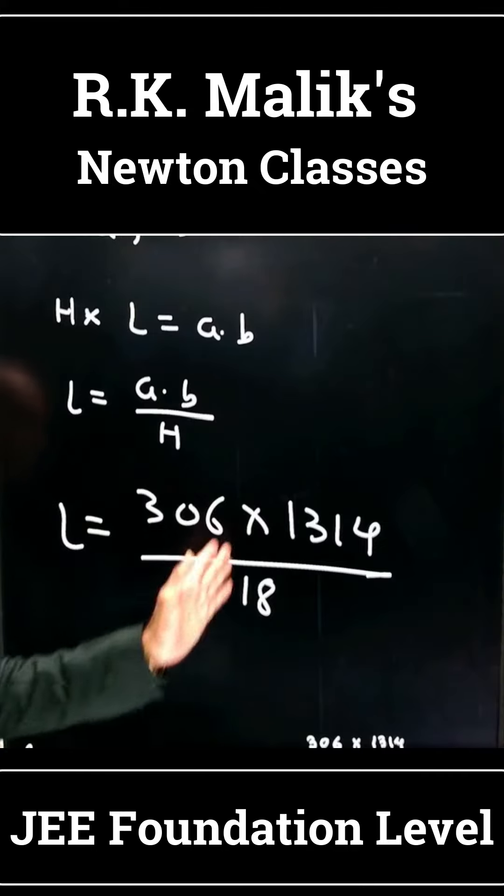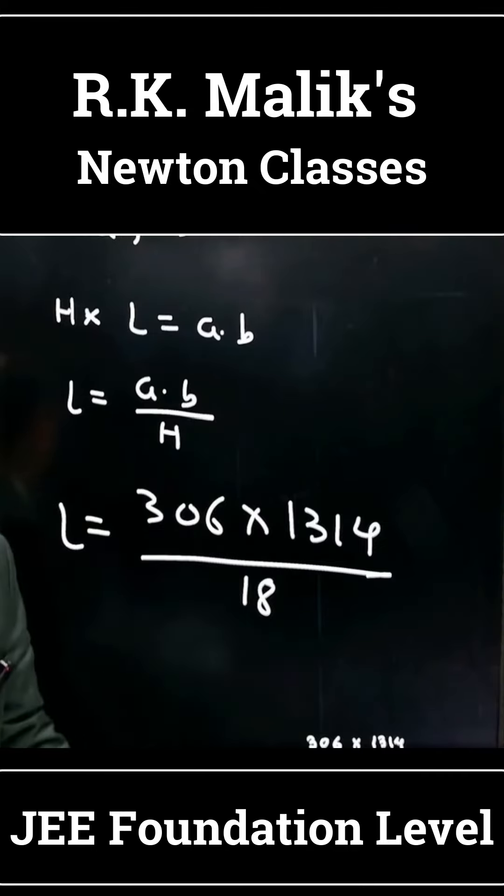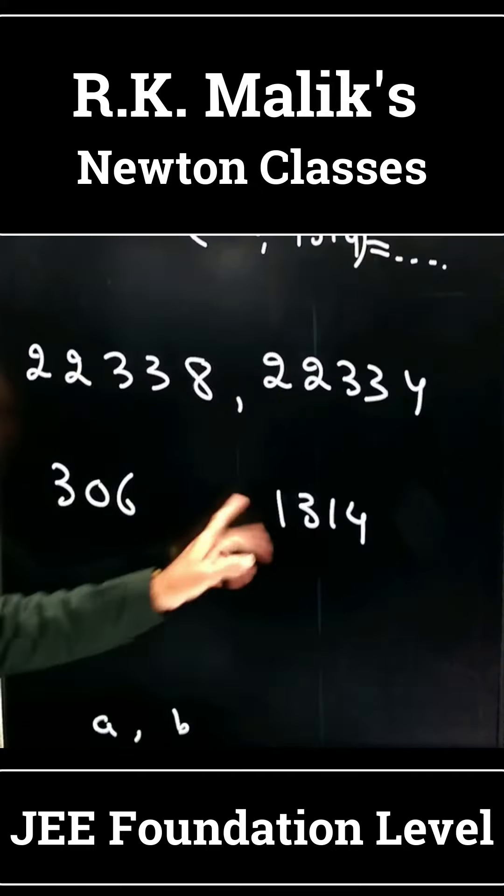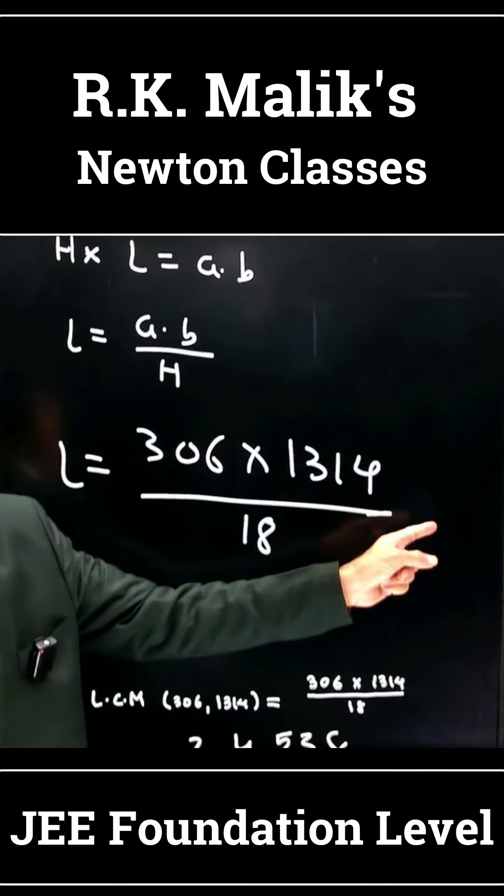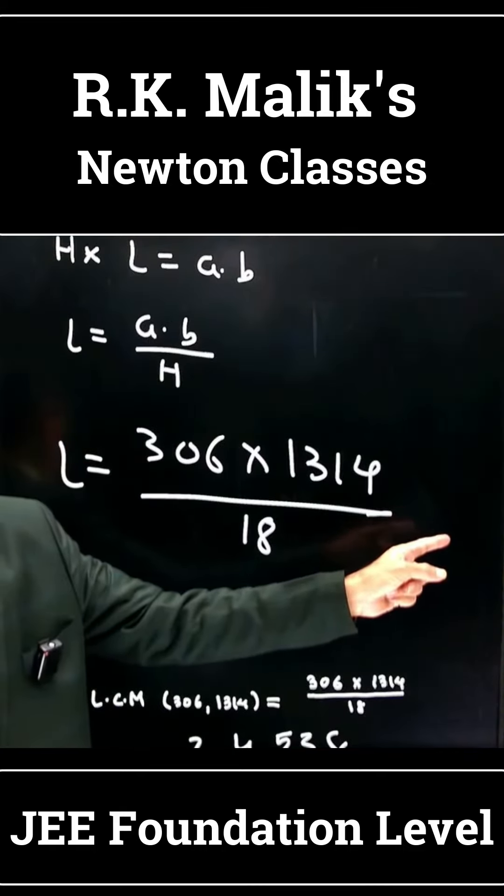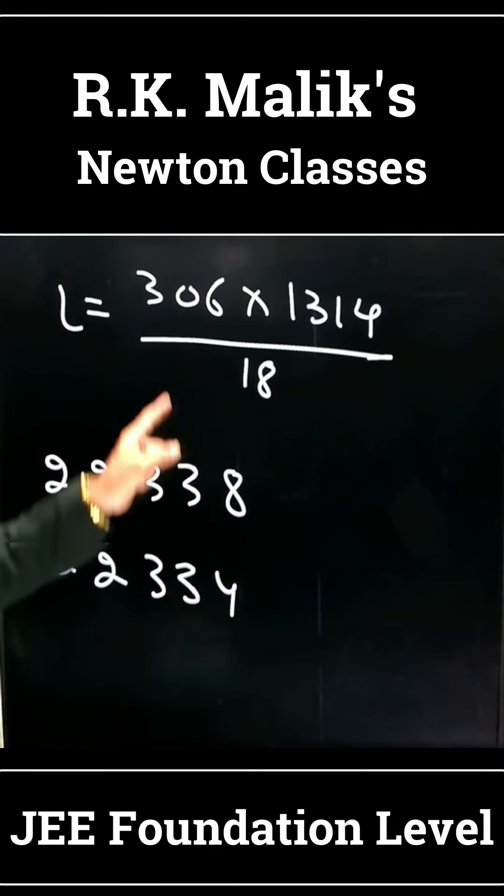But these two numbers are divisible by 18. Now, how do I check? This is clear: 306 and 1314 cannot be the answer, because these values of 306 and 1314 are not possible.